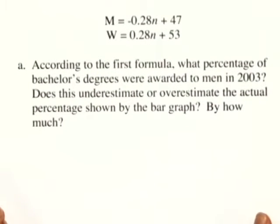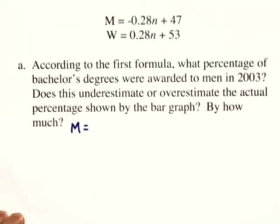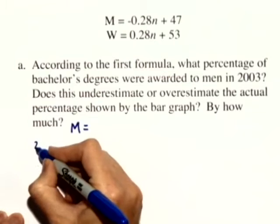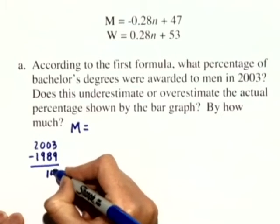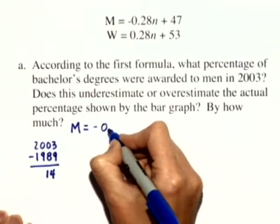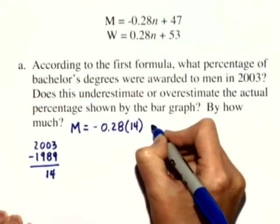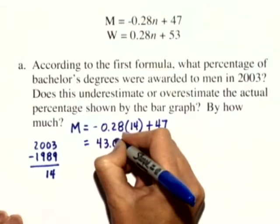In Part A, according to the first formula, what percentage of bachelor's degrees were awarded to men in 2003? We need to take 2003 and subtract 1989, because N is the number of years after 1989, giving us 14 years later. So we substitute 14 in for N: M equals negative 0.28 times 14 plus 47. If we calculate this, we get a total of 43.08.